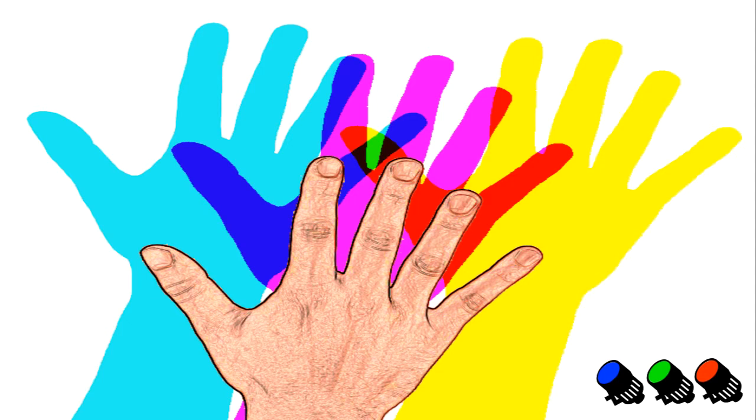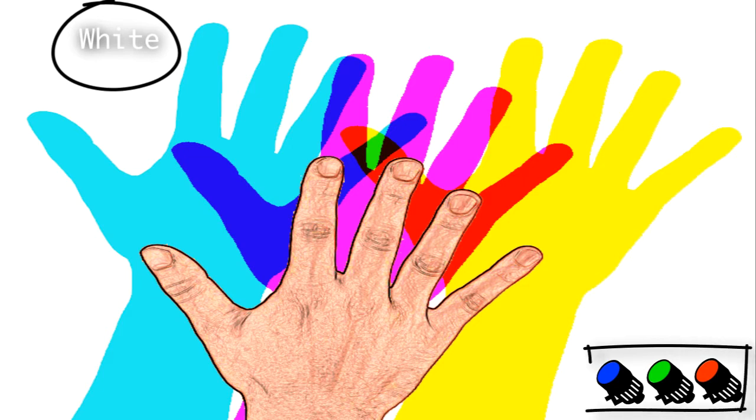Alright, back to the explanation. We begin with the easiest color on the screen, white. We see white where there is no shadow because all three light sources—red, green, and blue—mix together to create white.